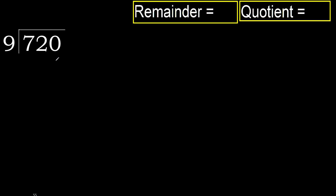720 divided by 9. 7 is less, therefore next. 72 is not less, therefore with 72.